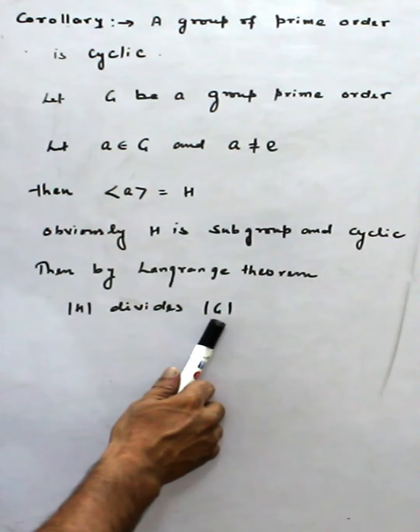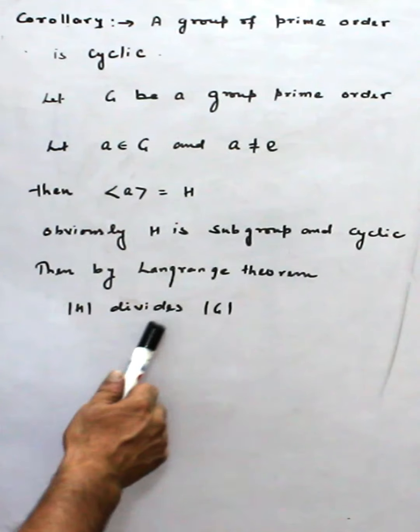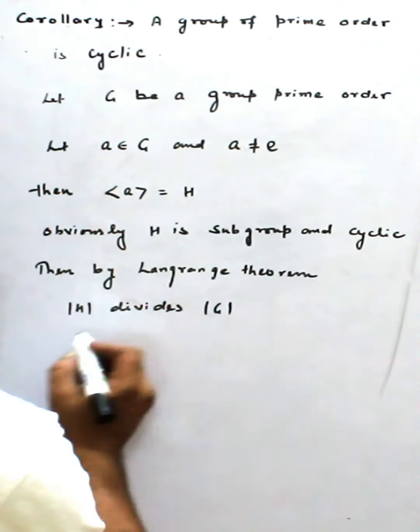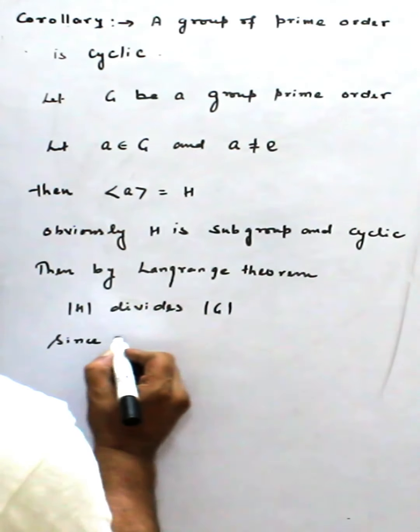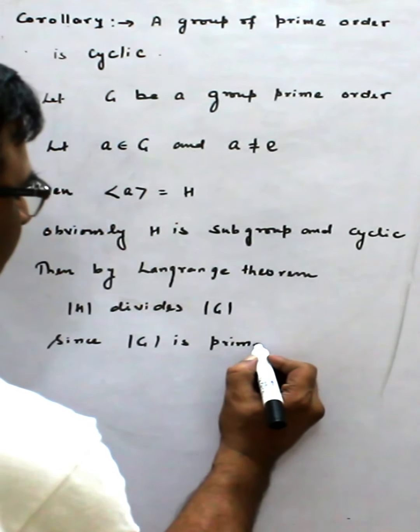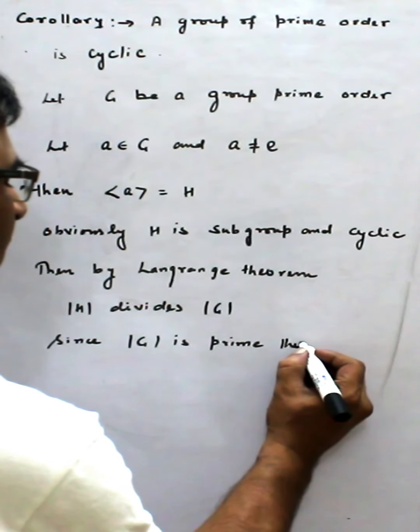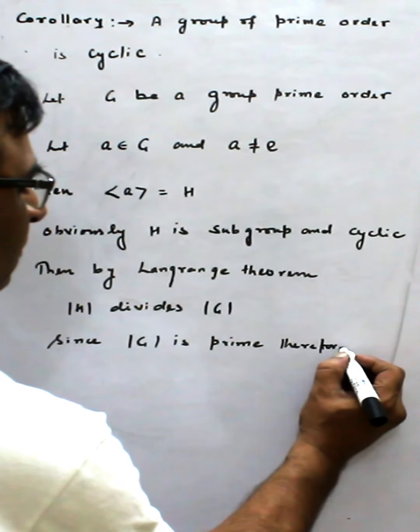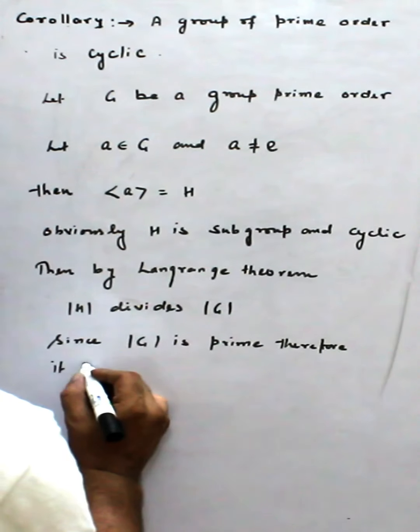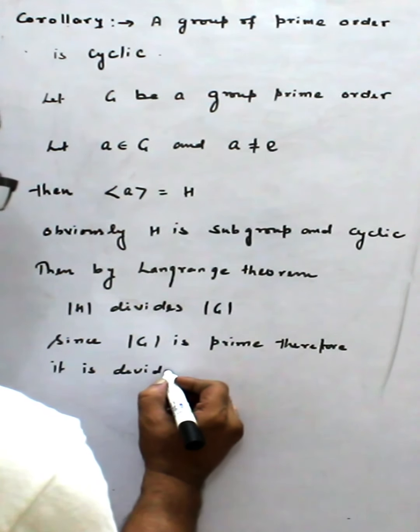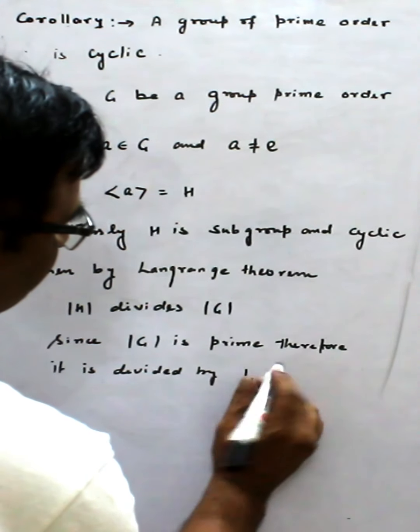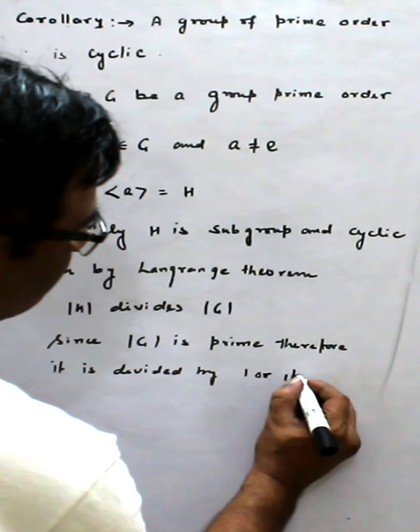But because the order of G is a prime number, it is divided by one or itself. Since order of G is prime, therefore it is divided by one or itself.